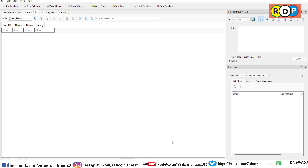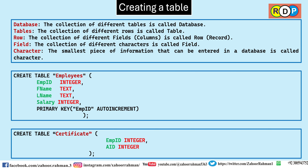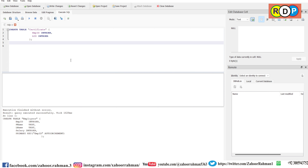Now let's create another table — the second table is certificate. The command is CREATE TABLE, and you write a meaningful table name. There are only two fields: employee ID with data type integer, and aircraft ID which is also integer. Let us create this in DB Browser. The command is written exactly as in the slide. Run it — it is also executed successfully and created.